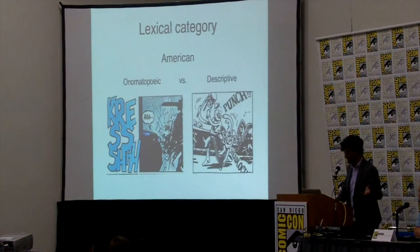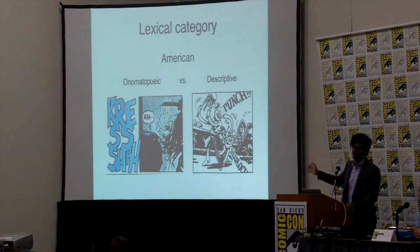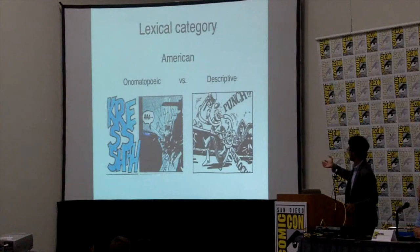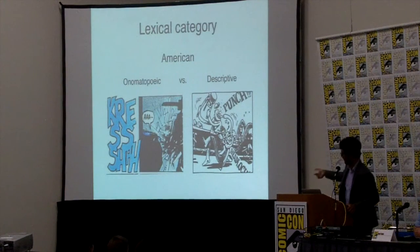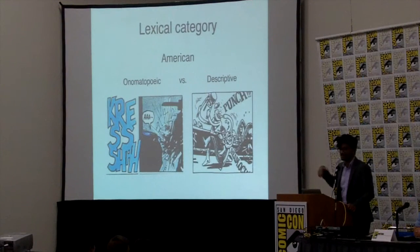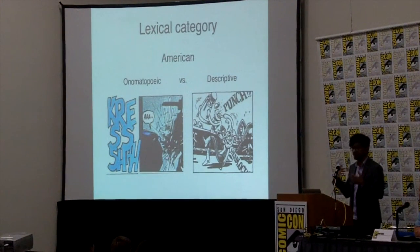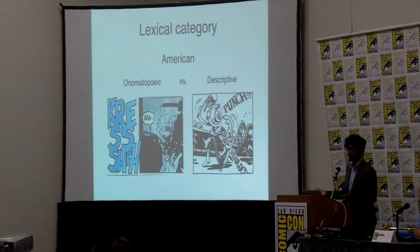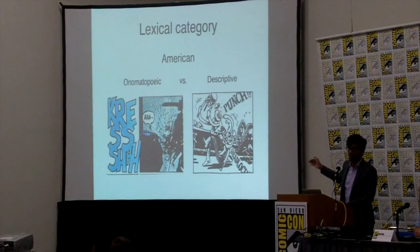Onomatopoeic sound effects are iconic representations of sounds — for example, 'creche,' like the sound of glass breaking. On the other side, for descriptive, we have somebody getting punched and literally the word 'punched' written on the page, or somebody in a headlock with the word 'headlock' on the page. One is an iconic representation, the other is symbolic. When coding American comics, we examined whether each sound effect fell into the former or the latter category.